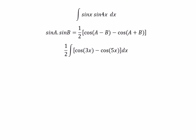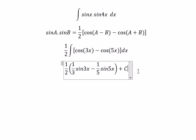And now we can get the final answer. The integral of cos 3x, you get 1 over 2, 1 over 3, sine 3x. The integral of cos 5x is 1 over 5, sine 5x. And we put C as the constant.